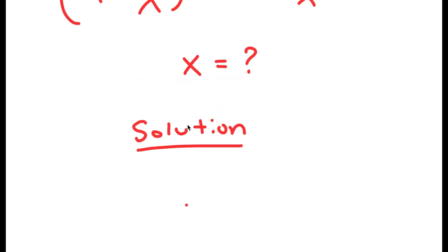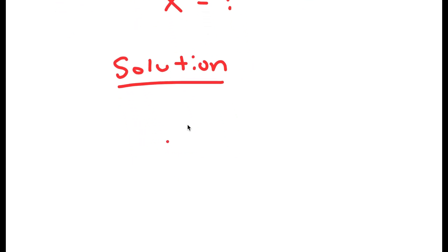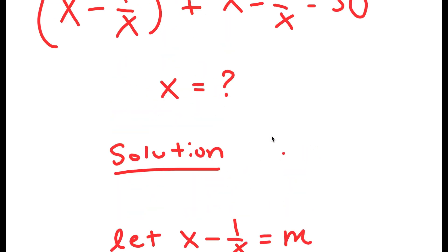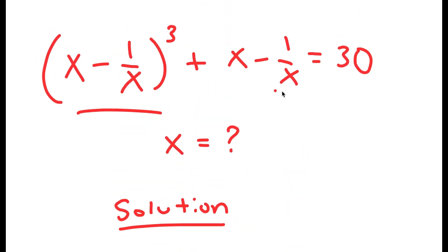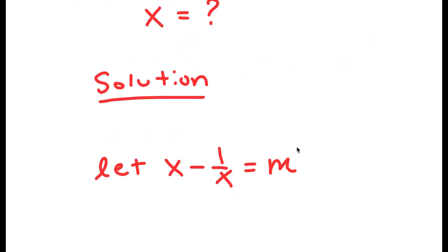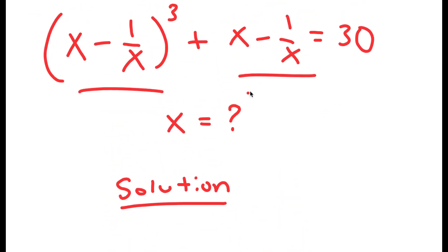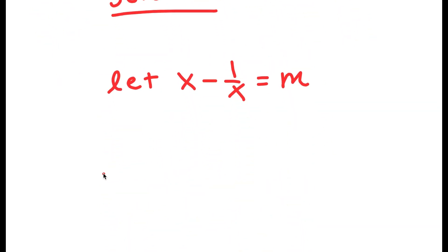For my solution I'm going to start out by letting x minus 1 over x equal to the variable m, because notice how we have x minus 1 over x here and x minus 1 over x here. Whenever you find two matching terms, the easiest thing to do is to just set them equal to a variable so that you can simplify the equation.